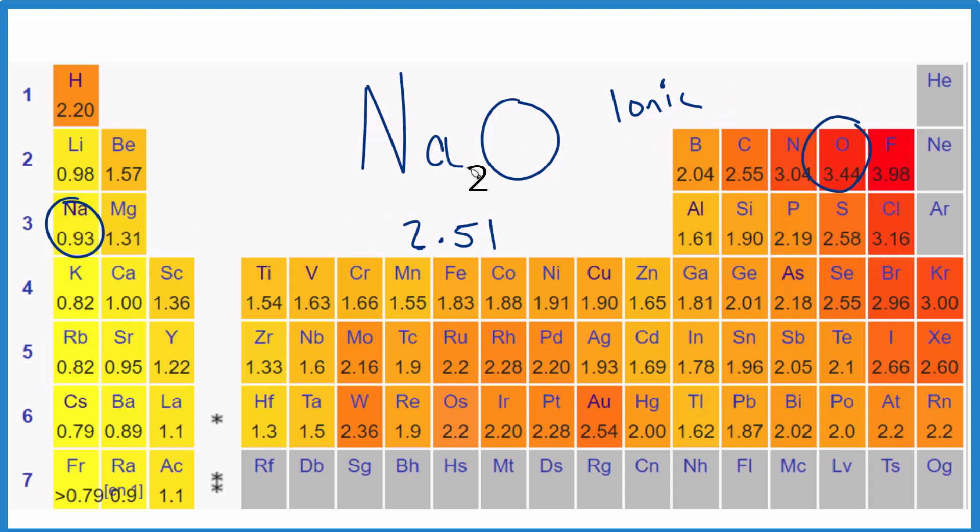But in answer to our question, the difference in electronegativity between sodium and oxygen is 2.51. That makes an ionic bond, and oxygen is more electronegative.